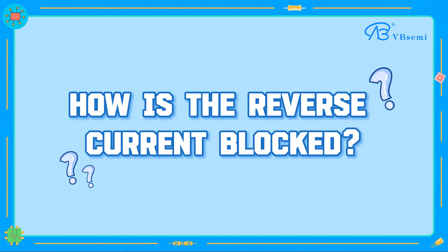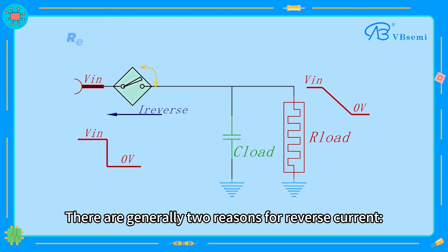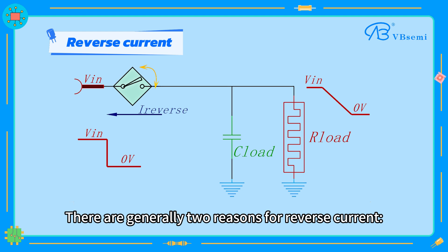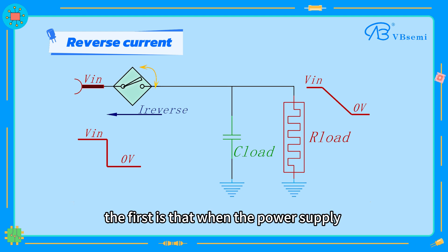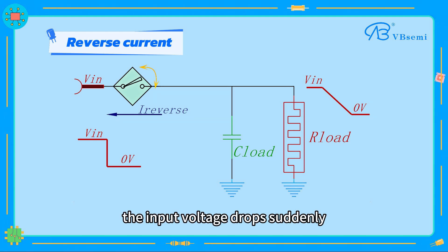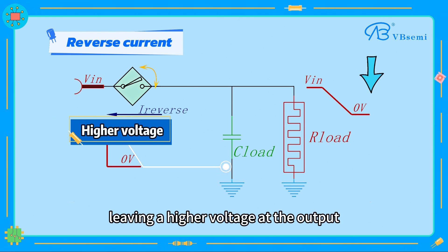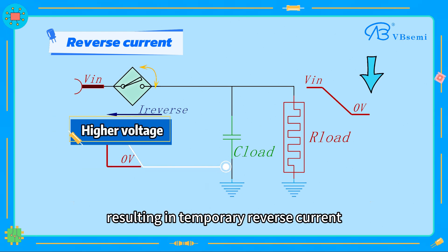How is reverse current blocked? There are generally two reasons for reverse current. The first is that when the power supply and system are disconnected, the input voltage drops suddenly, leaving a higher voltage at the output, resulting in temporary reverse current.